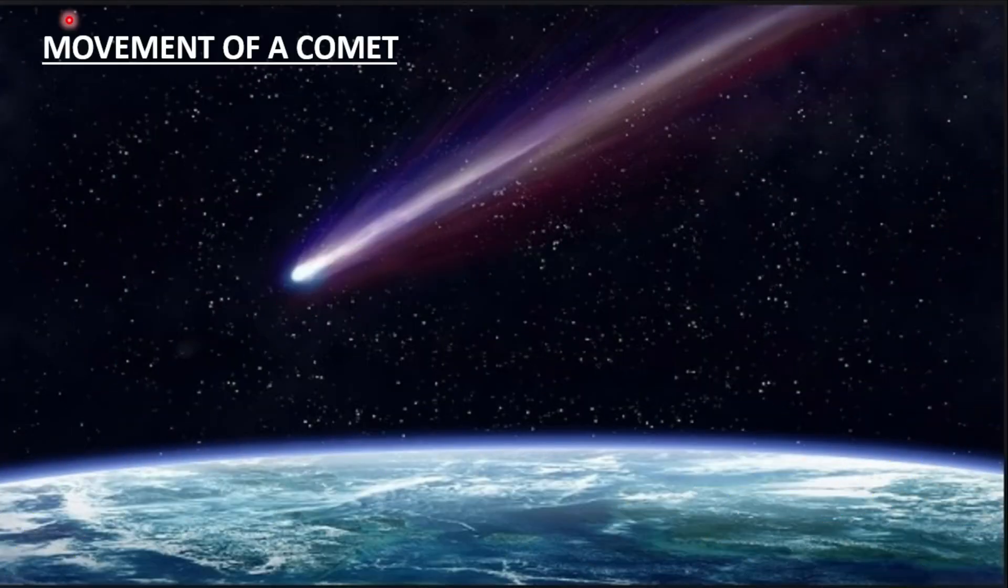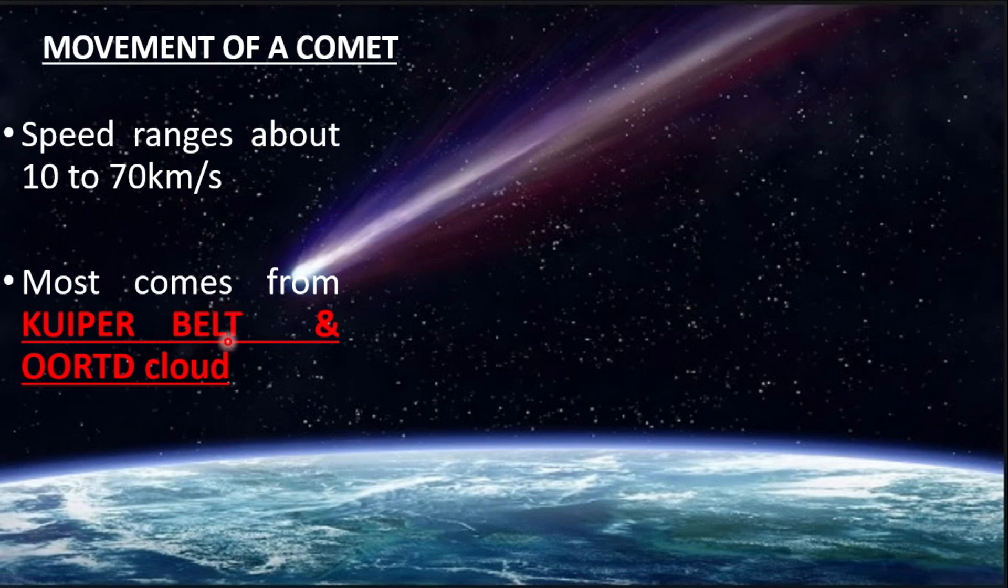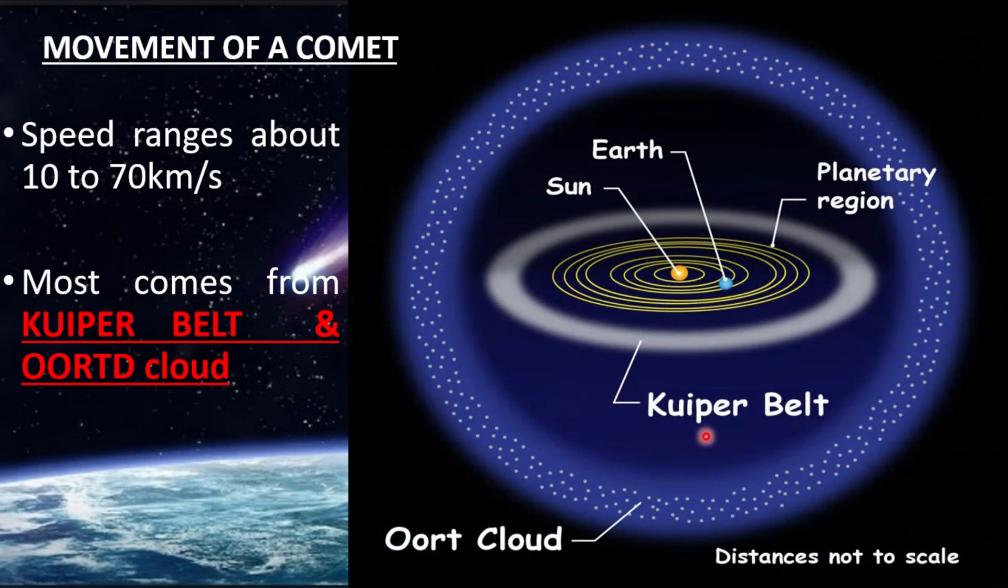The movement of a comet. Its speed range is about 10 to 70 km per second, and most of the comet comes from Kuiper Belt and Oort cloud. This is the diagram of Kuiper Belt and Oort cloud.